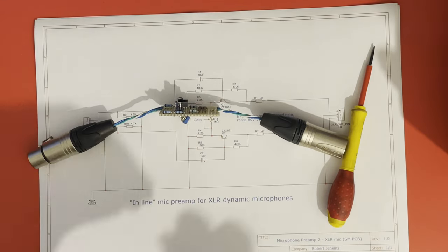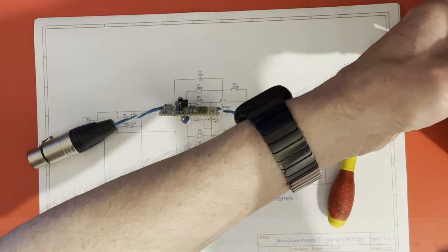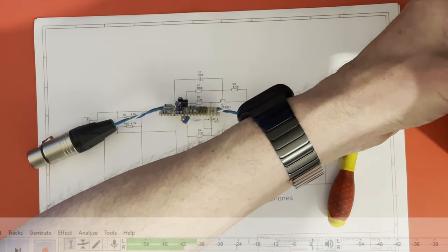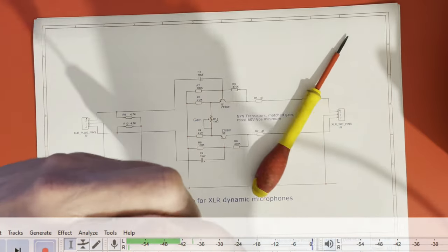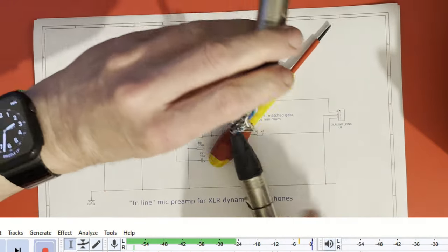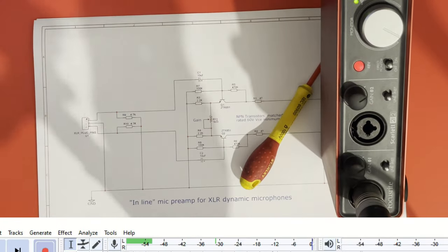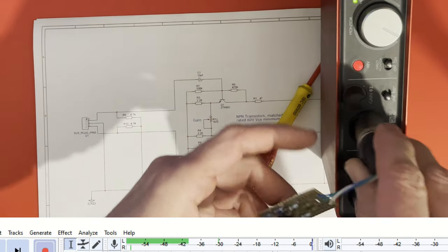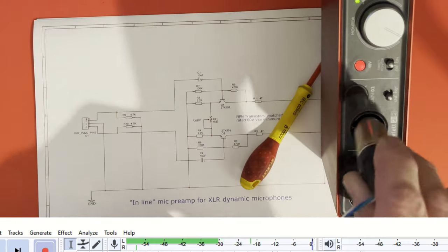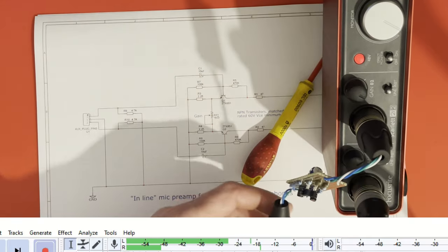Right, now I'll turn the gain to minimum to start with. That is what it's set for and I'll put it in line with the SM7 because that's the lower output one. Just bring that into view again.